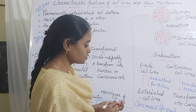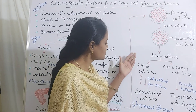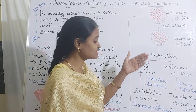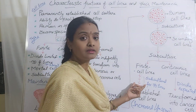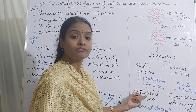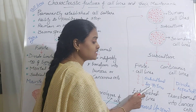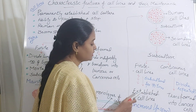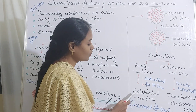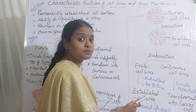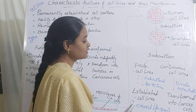When you subculture them for more than 70 times — when you are transferring them into fresh media more than 70 times — they attain new characters. These cell lines, after 70 subculturings, are referred to as established cell lines. Why are they called established cell lines? Because they have increased lifespan.